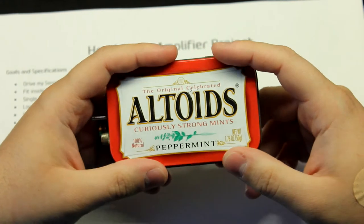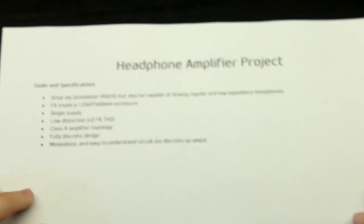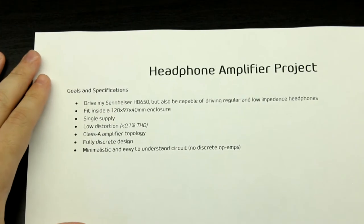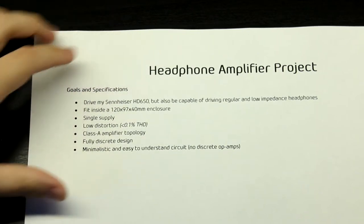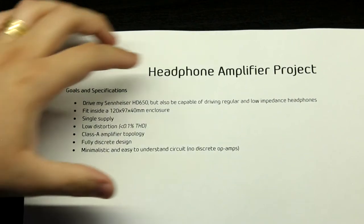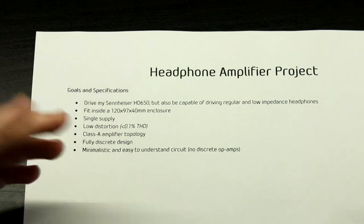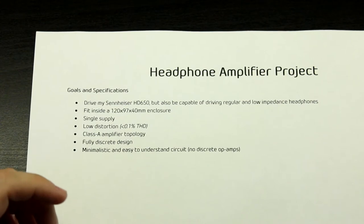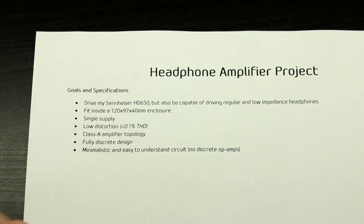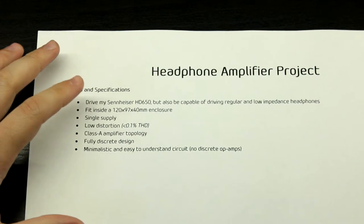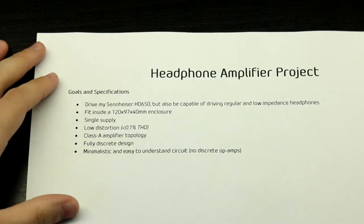I thought that's a really good way to teach people about analog electronics. This is what we are going to be building together — a headphone amplifier. It will have to drive a Sennheiser HD 650, but it should also be capable of driving regular headphones that are usually around 32 ohms, and also low-impedance headphones. Today there are some 16-ohm headphones, mainly because of mobile devices. I have a 300-ohm impedance headphone myself.